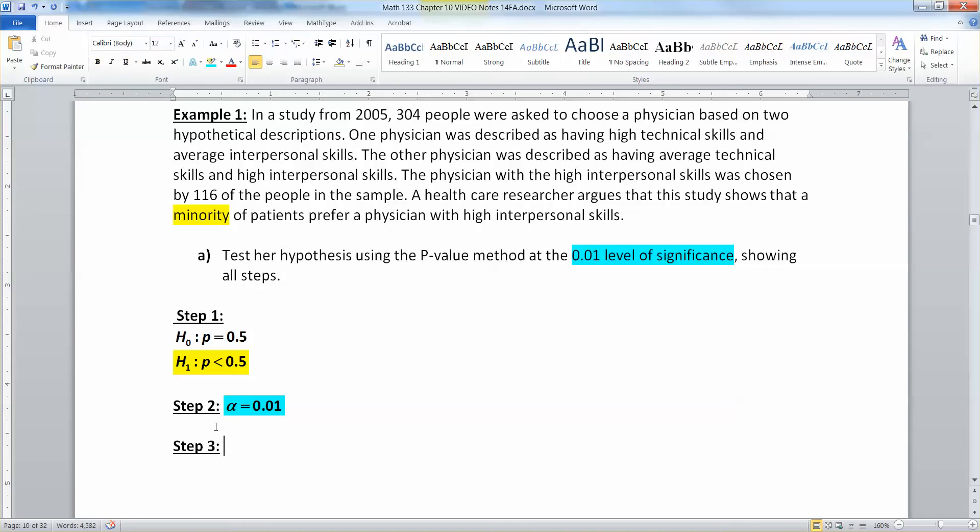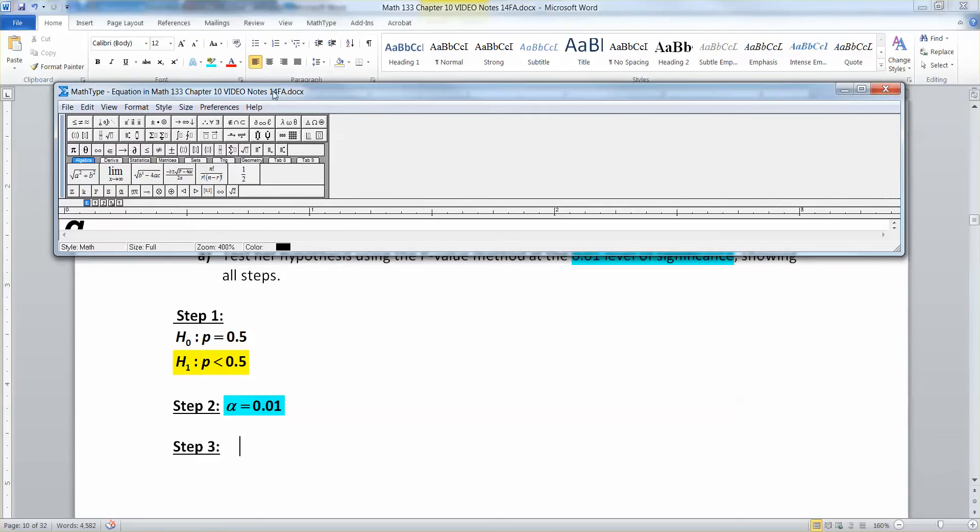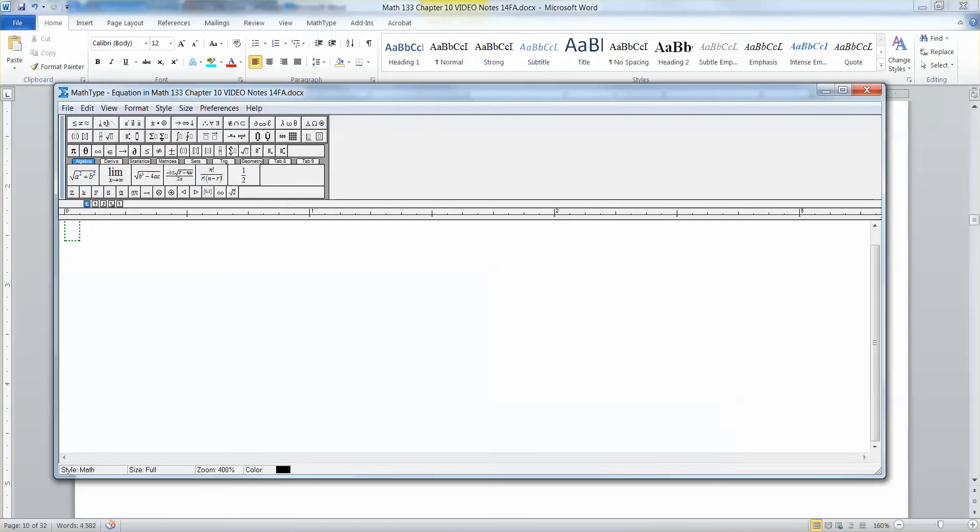Step three, we need to find our test statistic. The formula for that is: Here we go. Z0 equals P hat. There we go. Hat minus P0 over the square root of P0 times 1 minus P0 all over N.